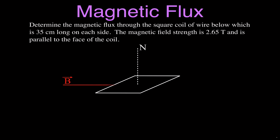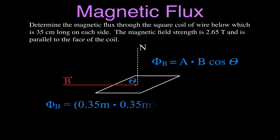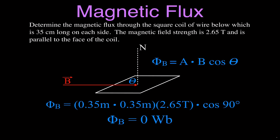For the next case, the magnetic field is parallel to the coil. The angle is therefore 90 degrees. We plug that in. The cosine of 90 is zero, so regardless of the area or magnetic field strength, the result is zero — zero Weber. There is no magnetic field going through that coil of wire.